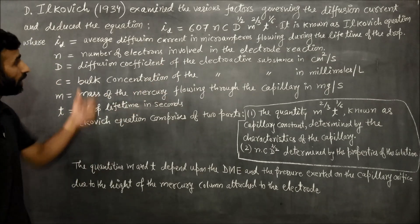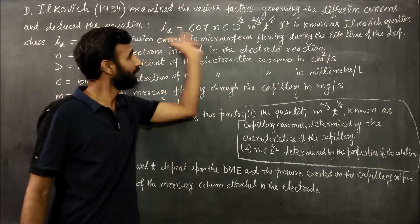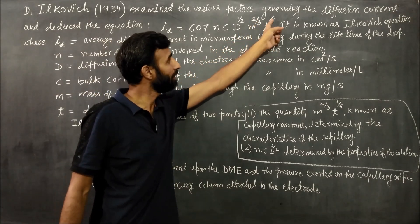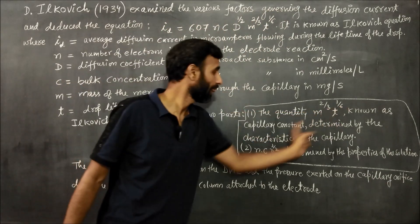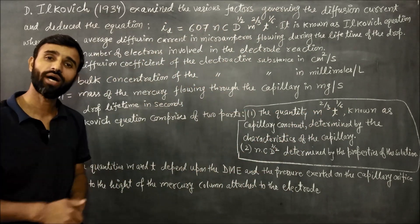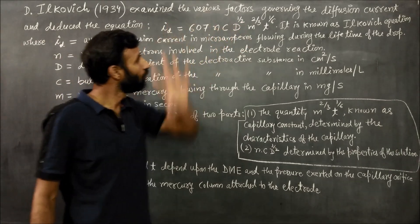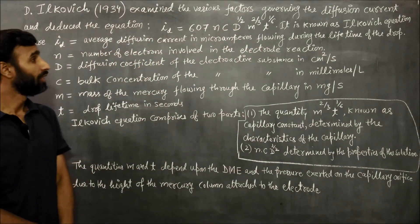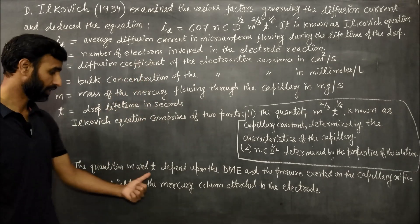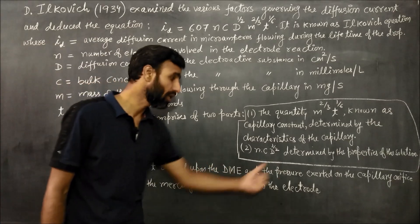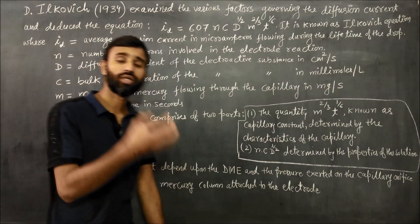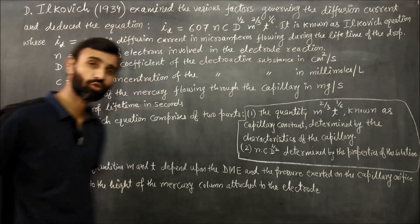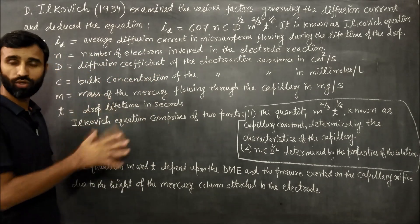The Ilkovic equation comprises two parts. First, m raised to 2/3 times t raised to 1/6 — this is called the capillary constant and is determined by the characteristics of the capillary. Second, n times c times d raised to 1/2 — this is determined by the properties of the solution. m and t depend upon the dropping mercury electrode and the pressure exerted on the capillary orifice due to the height of the mercury column.